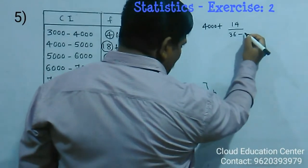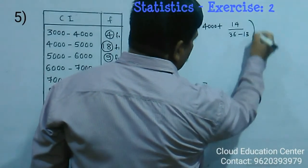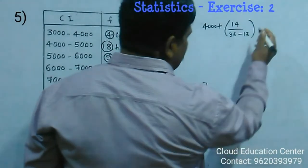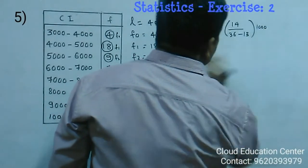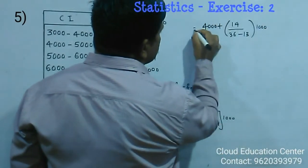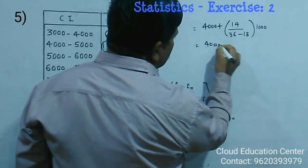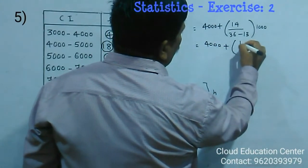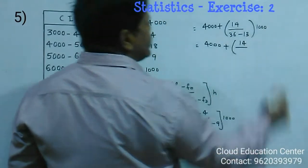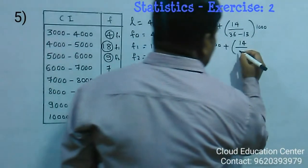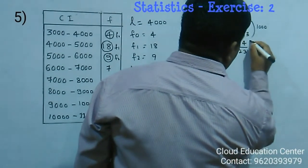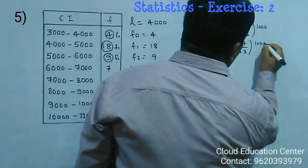Same sign you add it, minus 13 into this h is nothing but 1000. 4000 plus 14, 36 minus 13 is 23 into 1000.